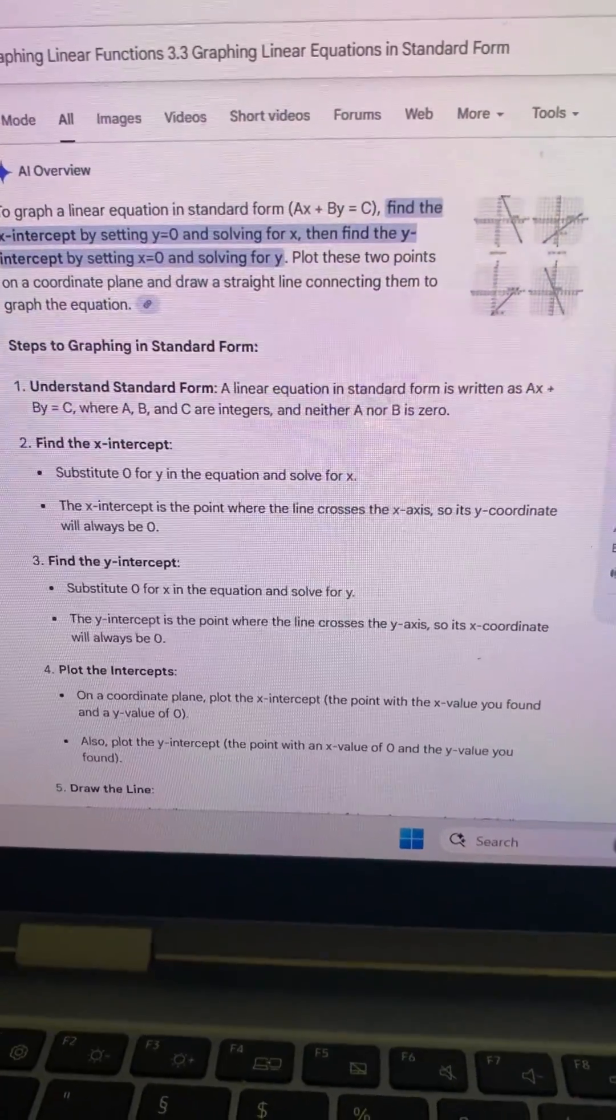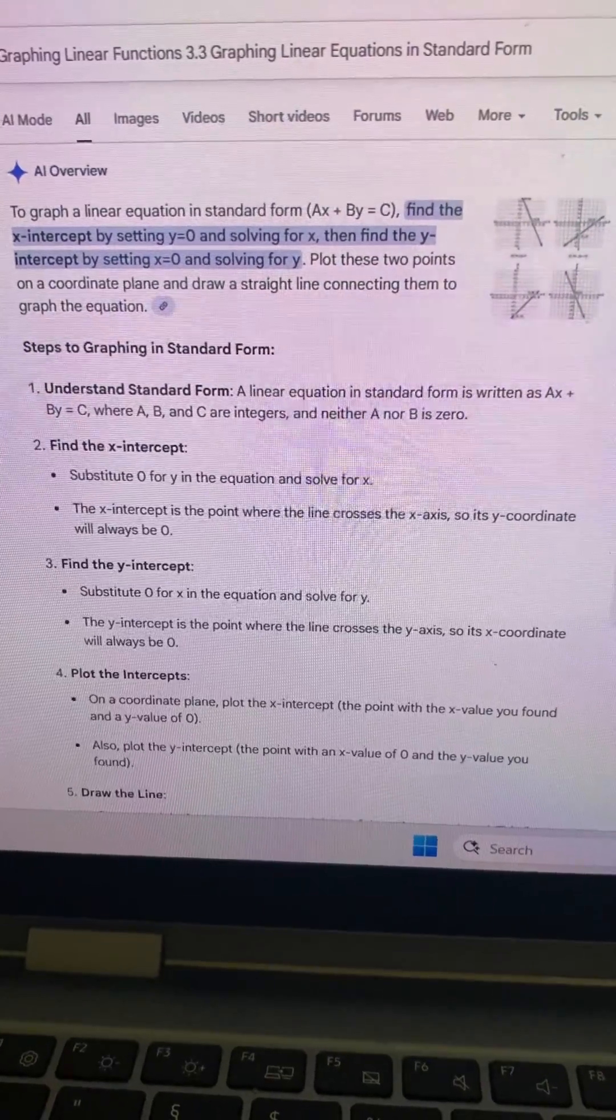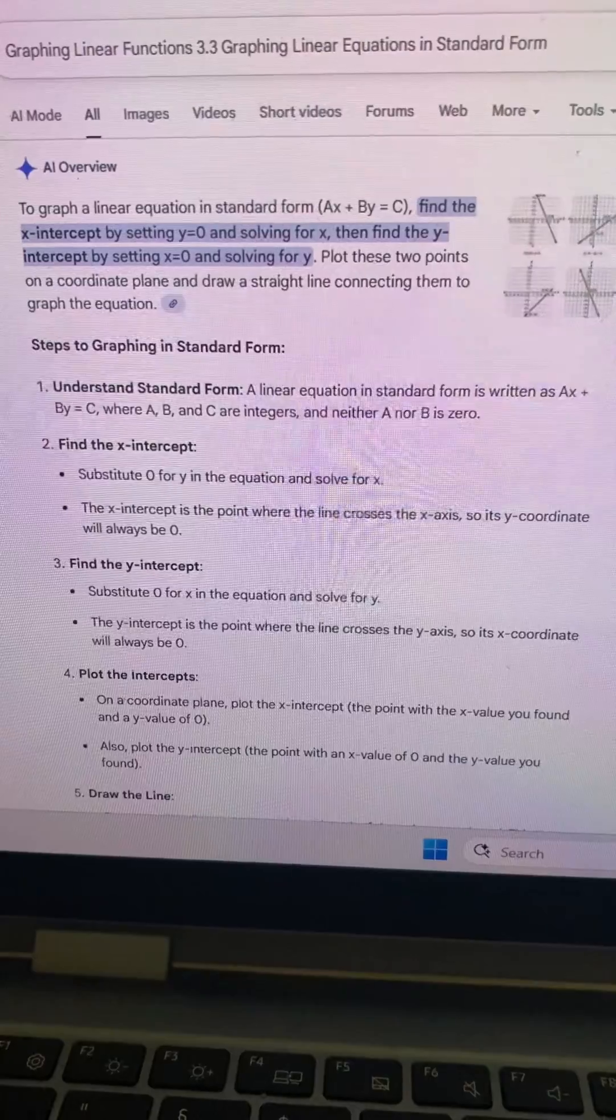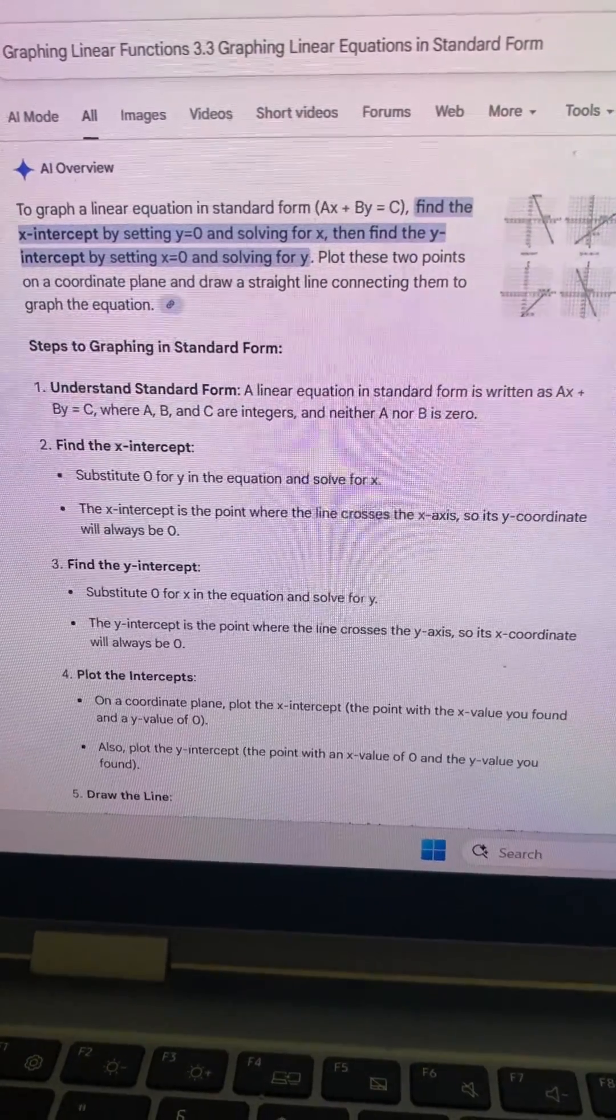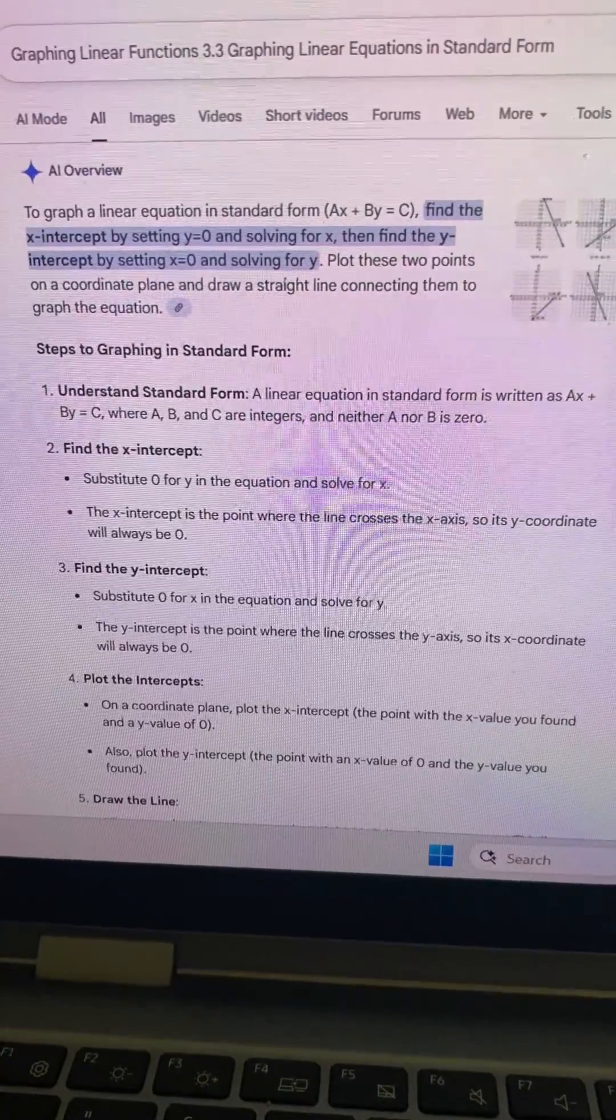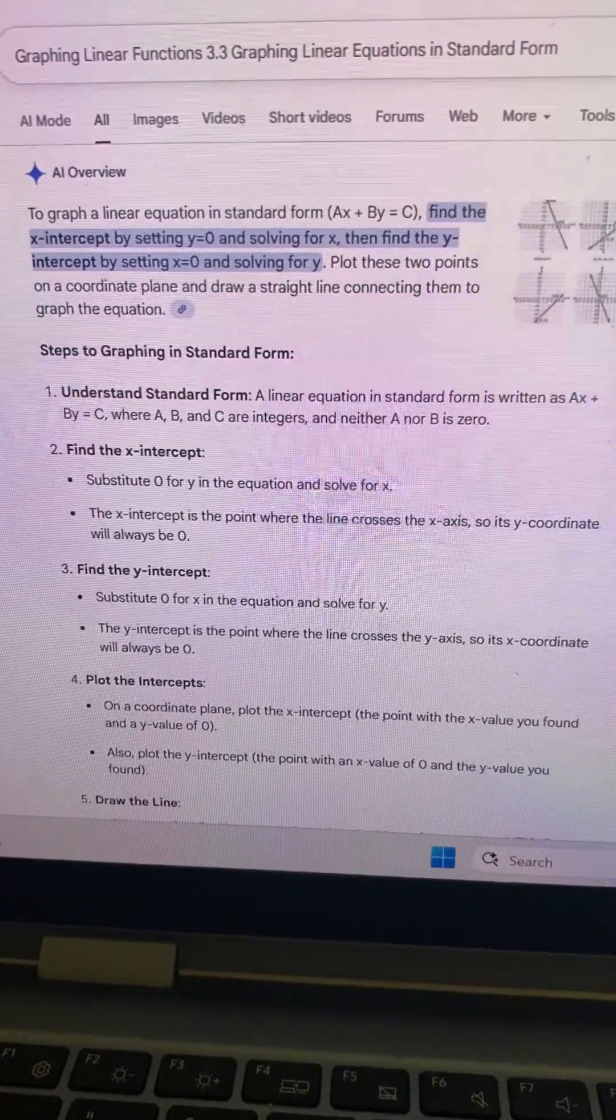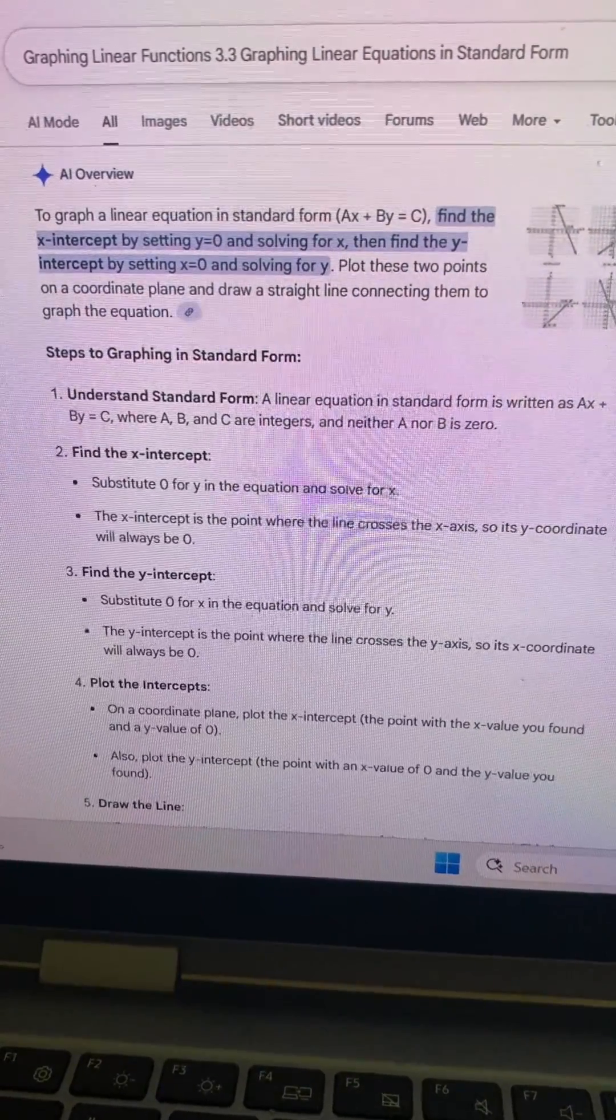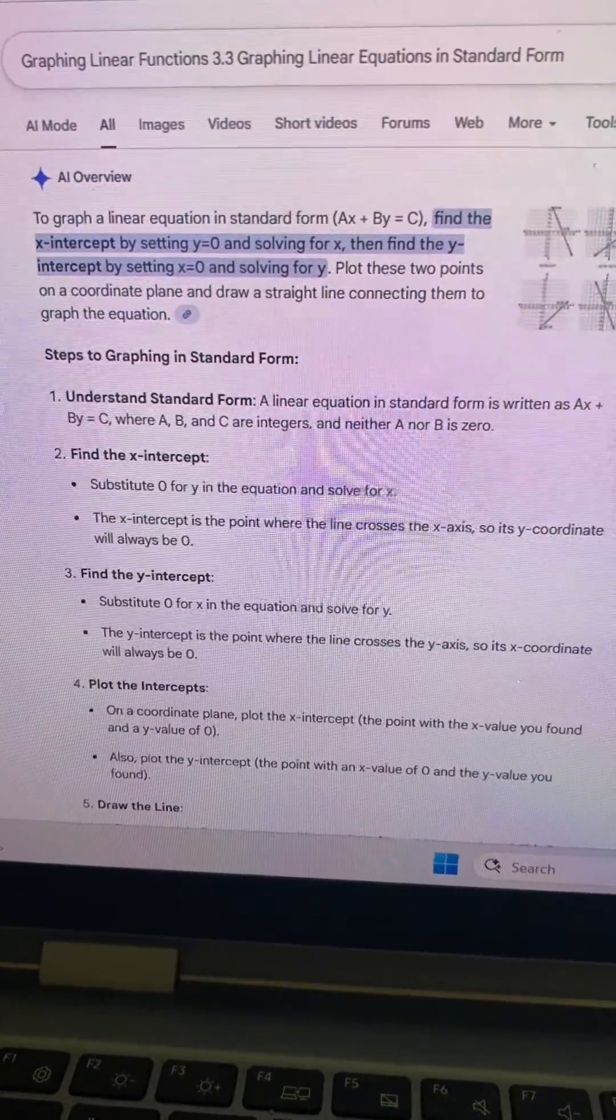To graph a linear equation in standard form Ax + By = C, find the x-intercept by setting y equal 0 and solving for x, then find the y-intercept by setting x equal 0 and solving for y. Plot these two points on a coordinate plane and draw a straight line connecting them to graph the equation.